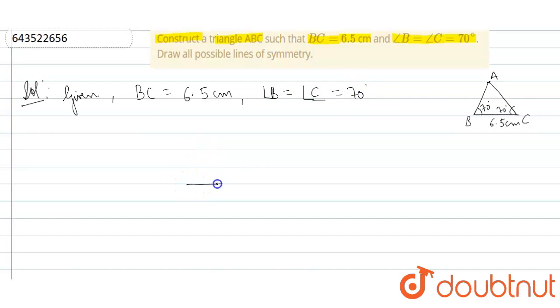Take a ruler and draw a line segment BC of length 6.5 cm. Taking a compass, taking a protractor...